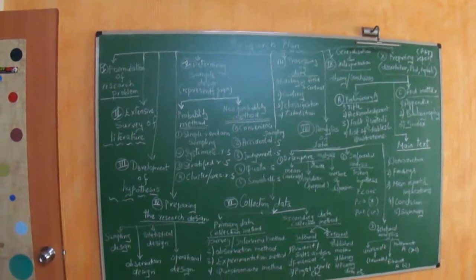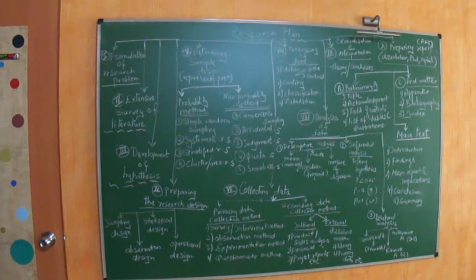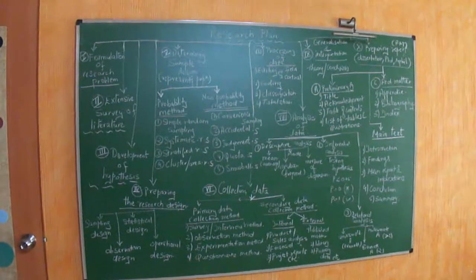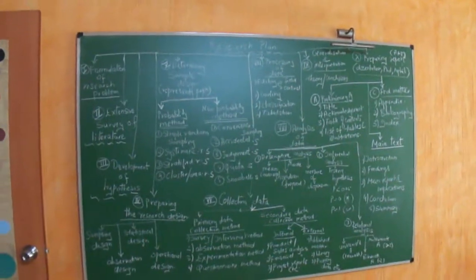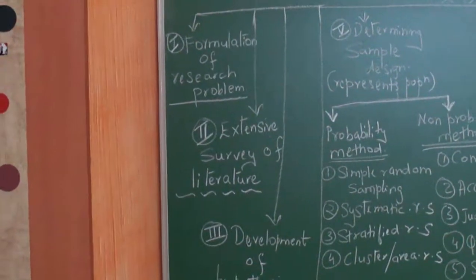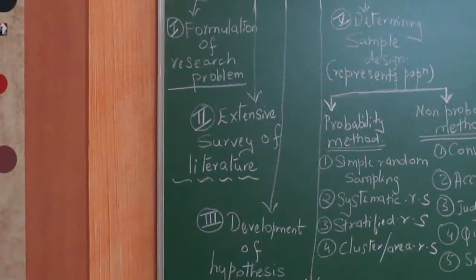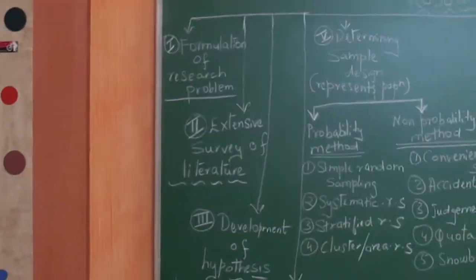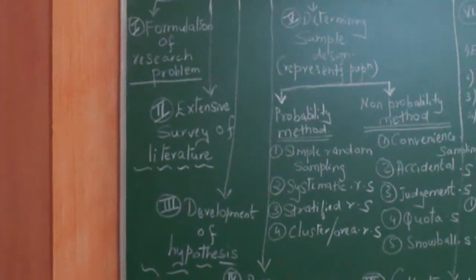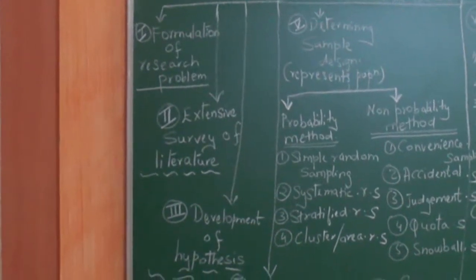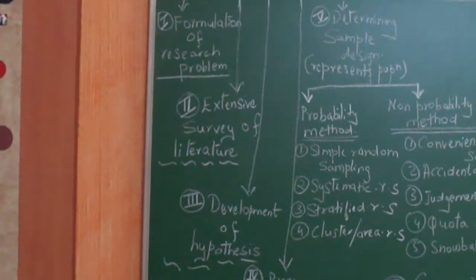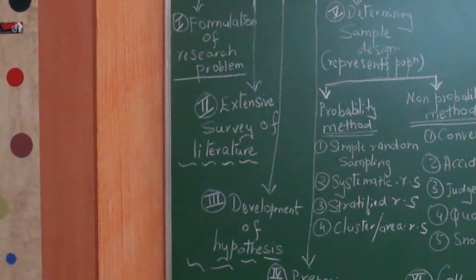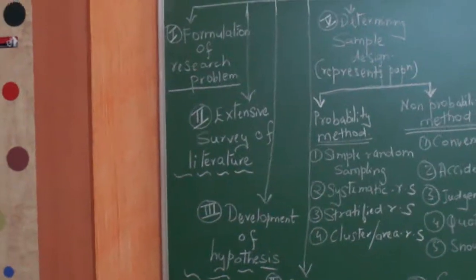When we want to do a research for any purpose, you have to have this research plan in mind. Basically it has about 10 points to be taken into consideration. Let's see this one by one. Let me zoom in to the first point. The first point says formulation of research problem. Whenever one wants to do a research, the first thing is to find out what you want to do a research on. So the first point is formulation of research problem.